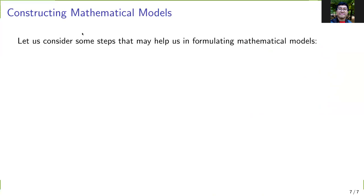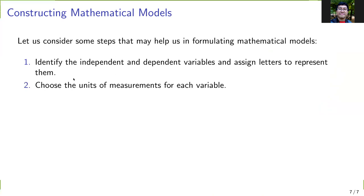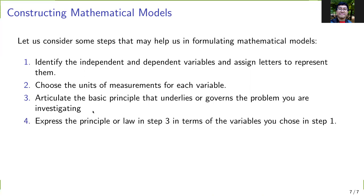Let us consider some steps that may help us in formulating mathematical models. First, identify the independent and dependent variables and assign letters to represent them. Second, choose the units of measurements for each variable. Third, articulate the basic principle that underlies the problem. Express the principle in variables. Then make sure all terms have the same physical units. This is a good check that your equation may work if the units are consistent.